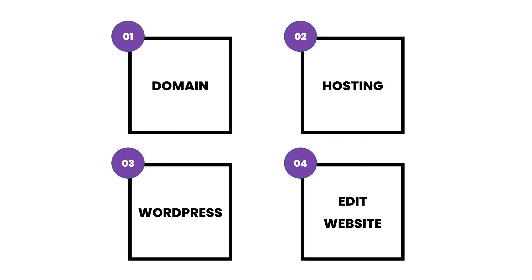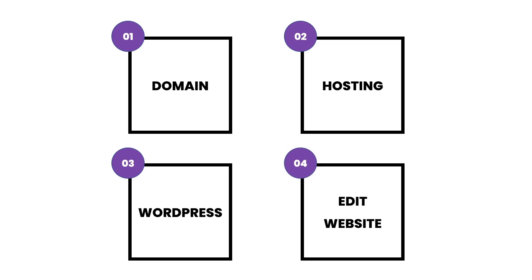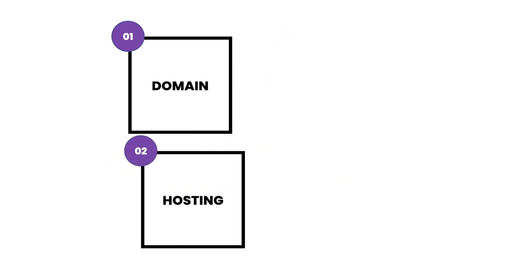This is going to be a four-step process. The four steps are: first, getting your domain name; second, getting your hosting; third, installing WordPress; and fourth, editing your website. So let's tackle the first and second steps — getting the domain and hosting — together.